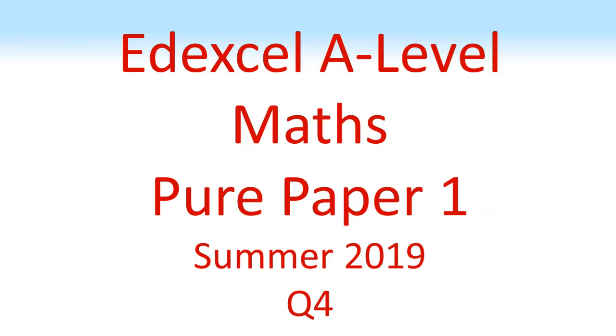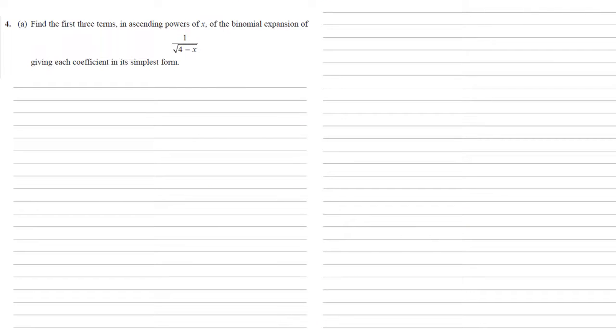Ed Excel, A Level Maths, Pure Paper 1, Summer 2019, Question 4. Find the first three terms in ascending powers of x of the binomial expansion of 1 over the square root of 4 minus x, giving each coefficient in its simplest form.